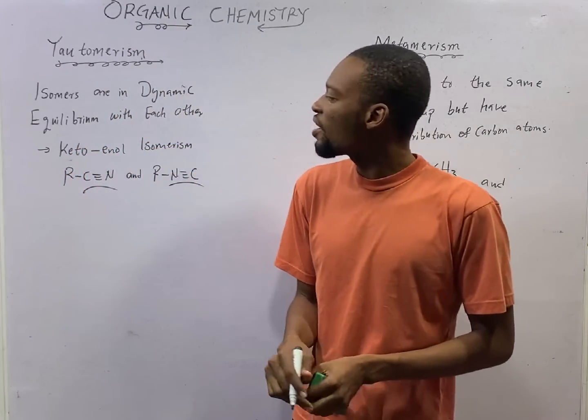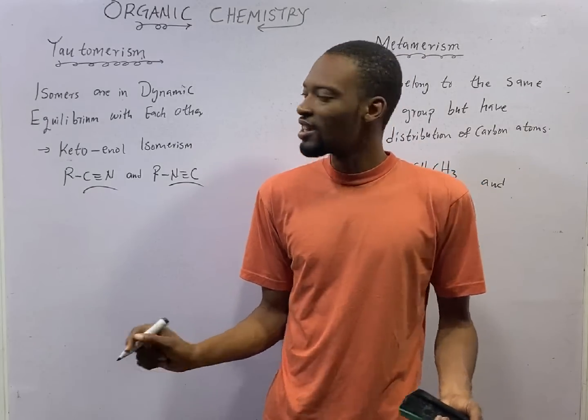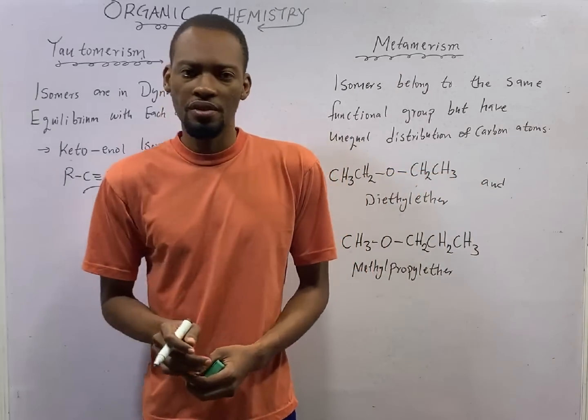JAMB will say keto-enol isomerism is an example of that. It is an example of Tautomerism.